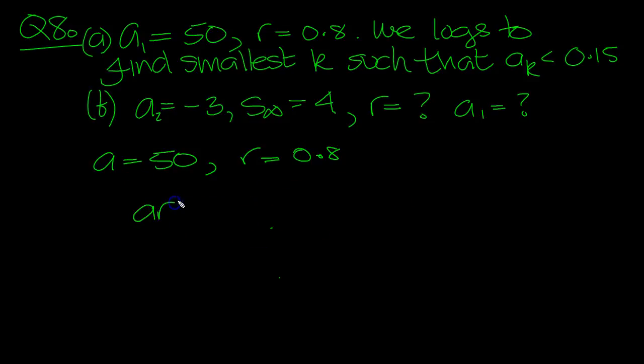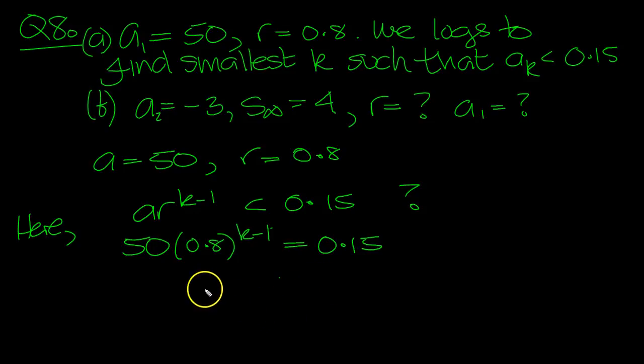The kth term is ar^(k-1) less than 0.15. When does that happen? Let's find out when it's equal. So we've got 50 times r^(k-1). When does that equal 0.15? So 0.8^(k-1) equals 0.15 over 50.